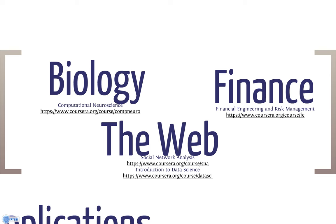In each application area, advanced data analysis might go by a different name, like computational neuroscience for the analysis of data from the brain, financial engineering for analysis of stocks and bonds, social network analysis for the analysis of data from Facebook or Twitter, and data science for the analysis of data from web technologies.